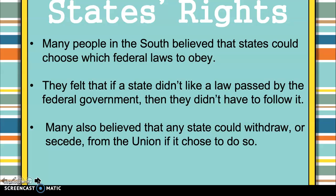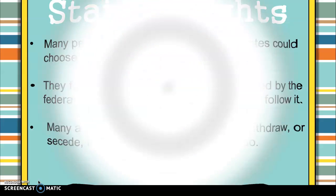A lot of states in the South believed they could choose which federal laws to obey and which ones not to obey. If they didn't like a law the federal government passed, they said they didn't have to follow it. They also believed that states could withdraw or secede from the Union. Just so you know, a state cannot say they are not going to follow a federal law — all states have to follow it. But that's not what they believed.